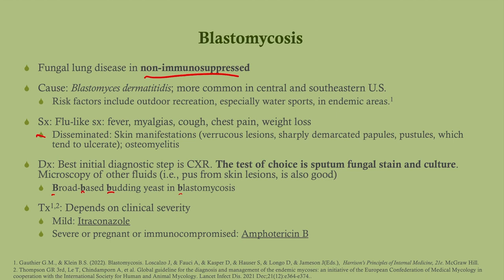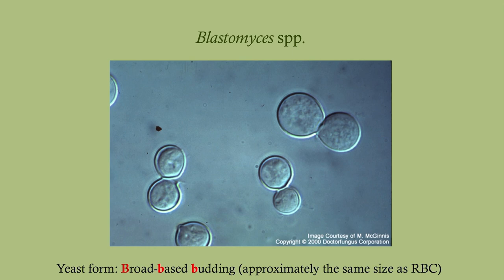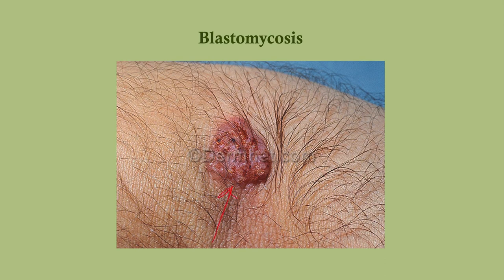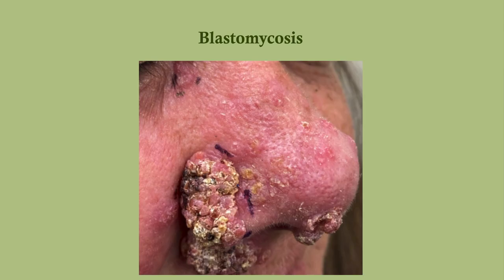On the exam, you'll likely see a patient diagnosed with community-acquired pneumonia on azithromycin or amoxicillin who isn't getting better, with a history of outdoor activity near water in summer. The best initial step is chest X-ray, then more specific tests. For mild disease, use itraconazole. For severe or disseminated disease, immunocompromised patients, or pregnant patients — since they cannot receive azole antifungals — use amphotericin B. Microscopically, blastomycosis shows broad-based budding roughly the size of a red blood cell, and the classic verrucous skin lesion.